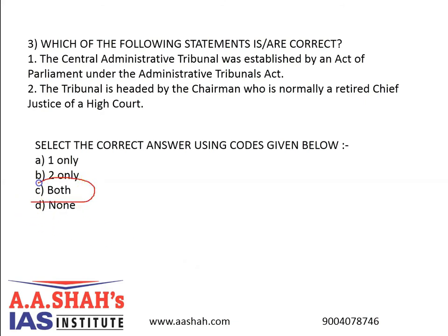The answer is C, both. The Central Administrative Tribunal has been established under Article 323A of the Constitution for adjudication of disputes and complaints with respect to recruitment and conditions of service of persons appointed to public service and posts in connection with the affairs of the Union or other authorities under the control of the government. The Tribunal is guided by the principle of natural justice and is not bound by the procedure prescribed by the Civil Procedure Code. Orders of the Tribunal are challenged by writ petition under Article 226-227 before the respective High Court.